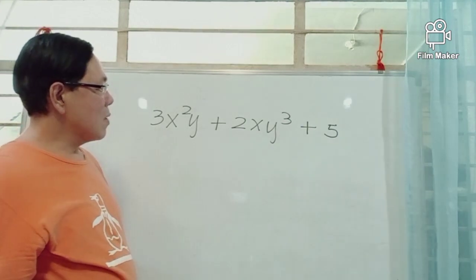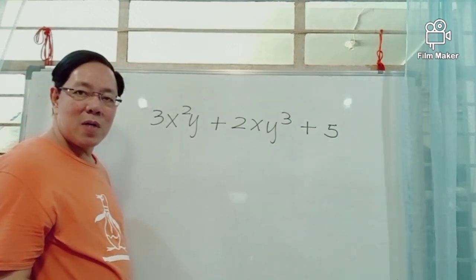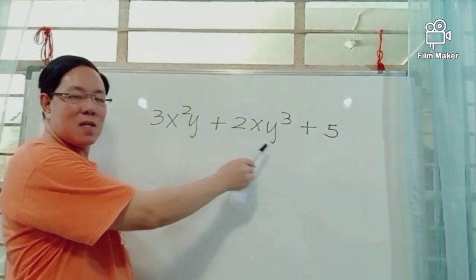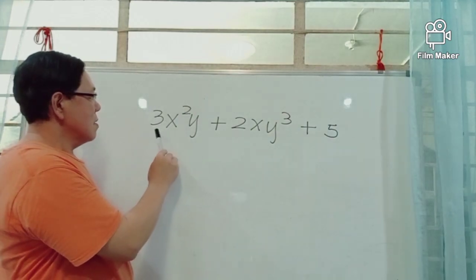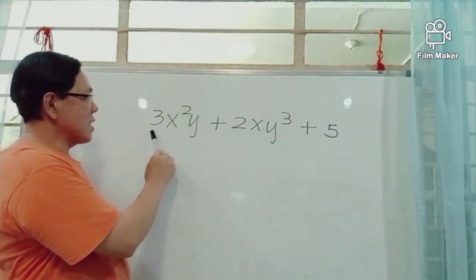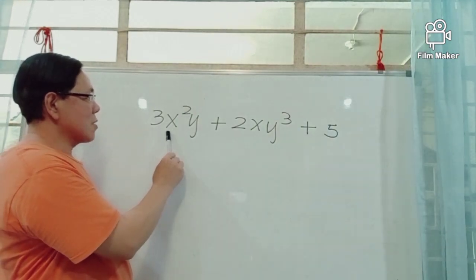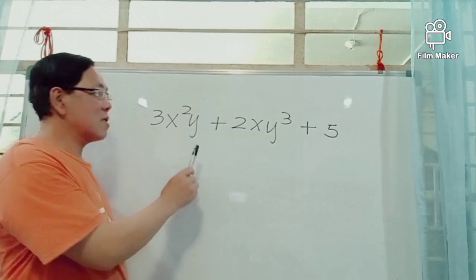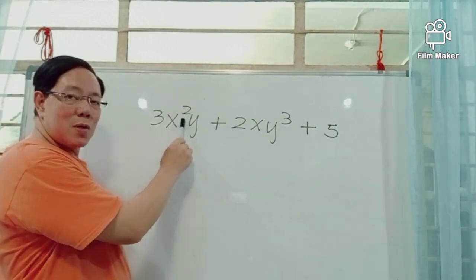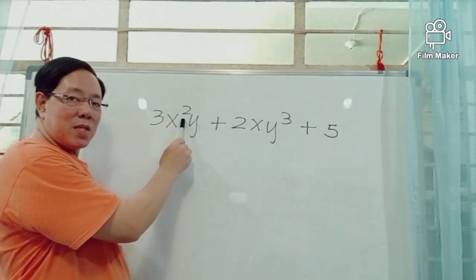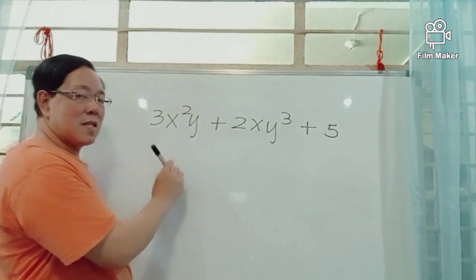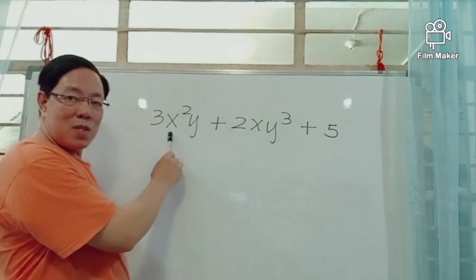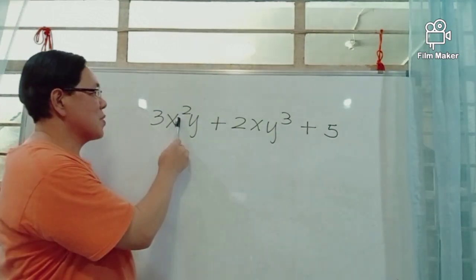There are also other operations in this algebraic expression. Between 3, x squared, and y, we have the operation multiplication. And 2 is called an exponent of x, which indicates that x is multiplied by itself two times.